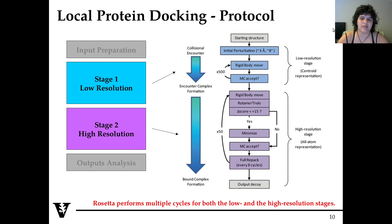Here is a more detailed description of what Rosetta is doing. Basically, we want to mimic nature where two proteins, like a casual encounter, form a sort of pre-complex, that is then refined through optimization of the side chain conformation. In the low resolution stage, we have an initial perturbation in translation — you move one partner relative to the other. In our default condition, we allow 3 Angstroms of translation and about 8 degrees of rotation. Then you have the rigid body move and the Monte Carlo sampling can accept or refuse it. This is repeated for 500 times.